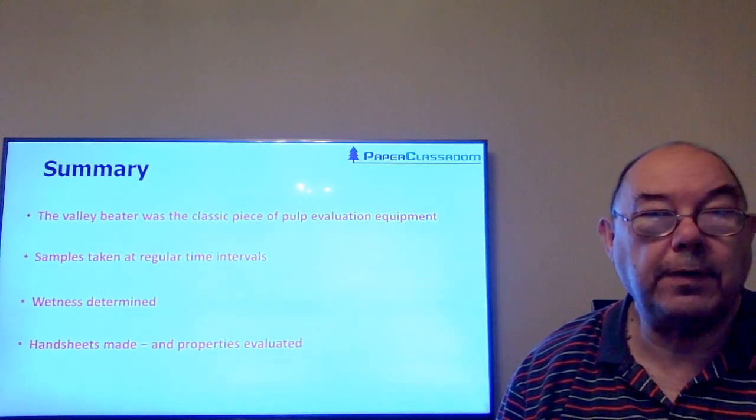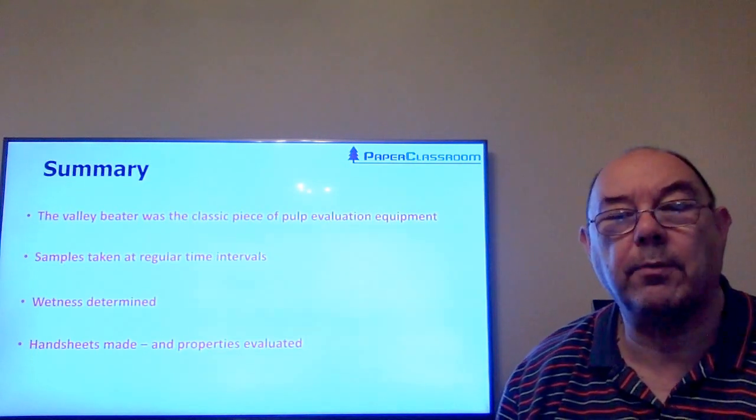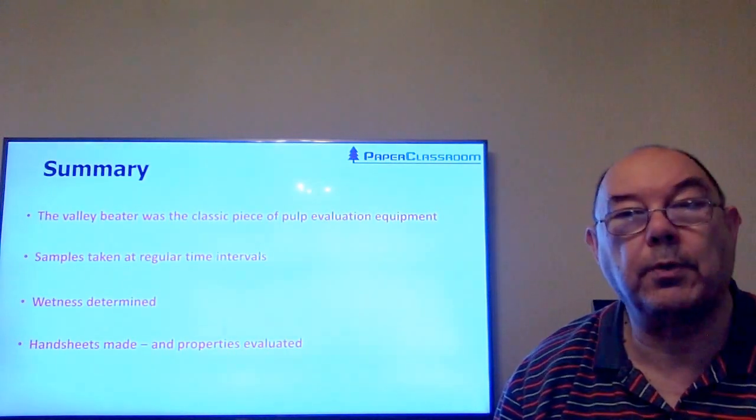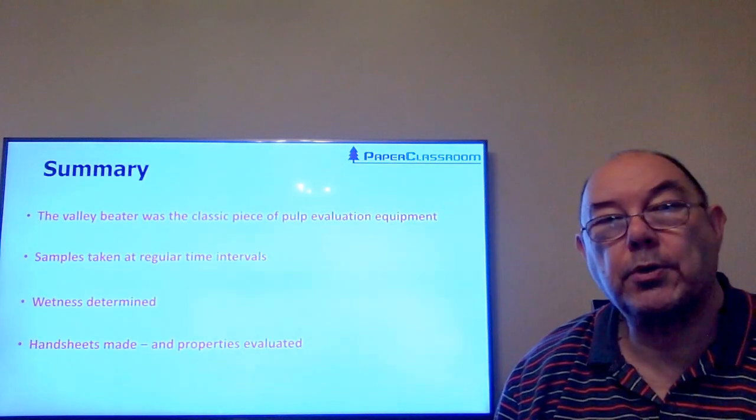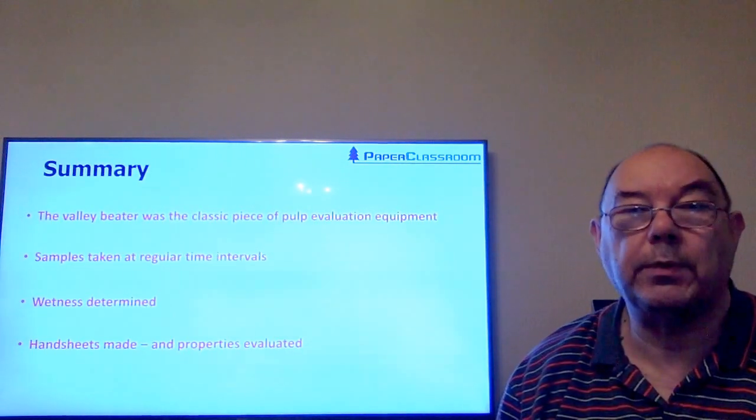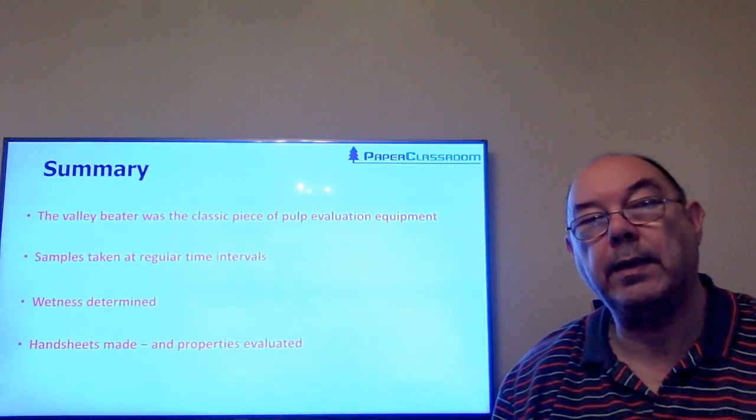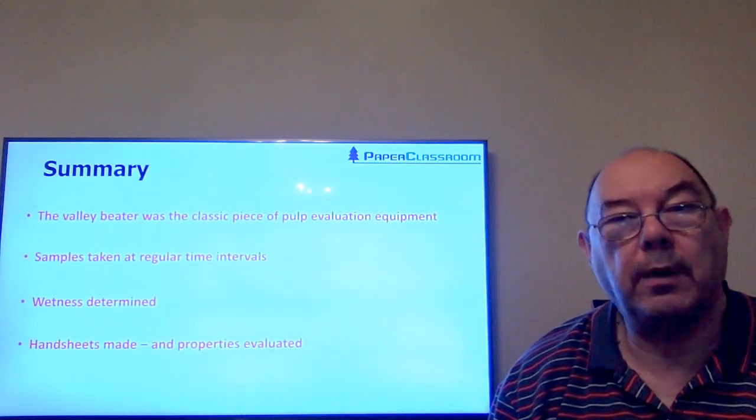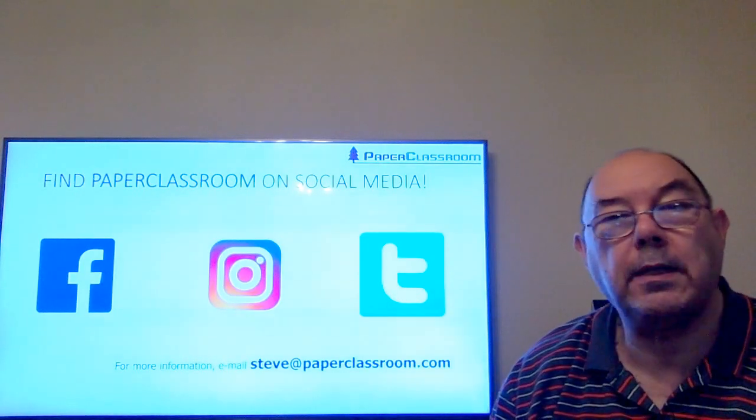So a summary of this video: the valley beater was the classic piece of pulp evaluation equipment. All mills used to have them at one time and they used to sample and test not just new types of fibers but delivery by delivery. We disperse the fibers in water, take samples at regular intervals, and with that sample we determine its Schopper Riegler wetness value. Then we make a hand sheet, dry it, condition it, measure the physical properties, and that's what we're talking about in the next set of videos. Thank you for listening, and if you want to follow us on any of this social media, please do so.